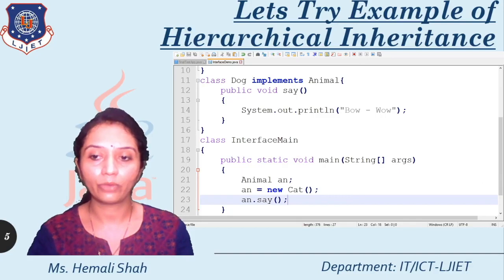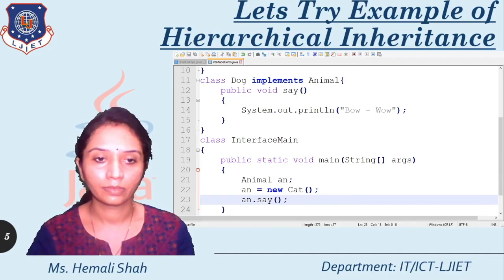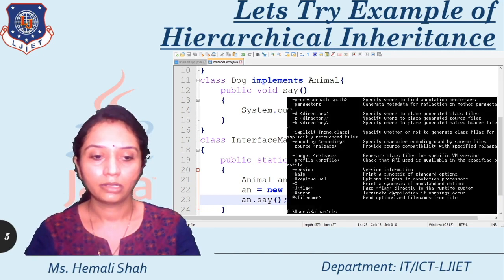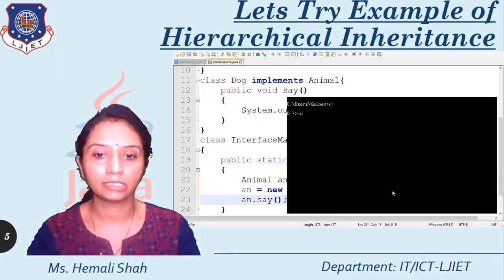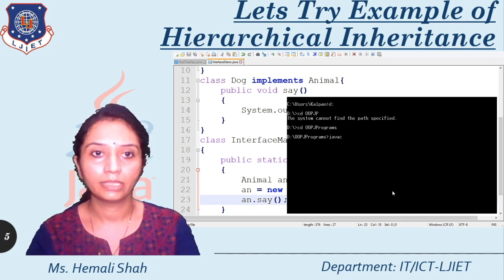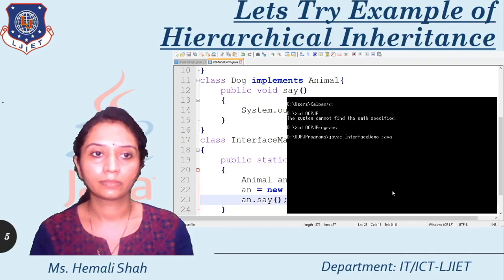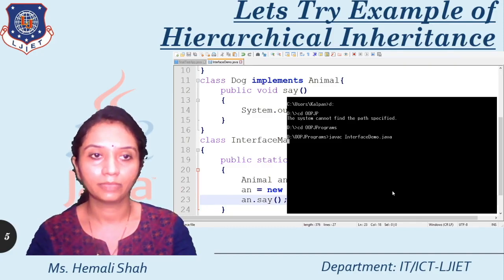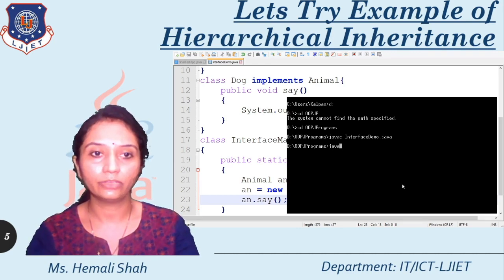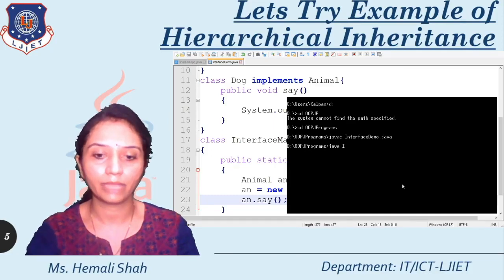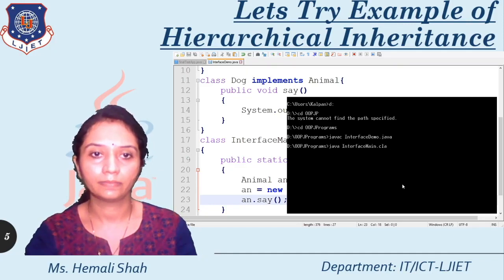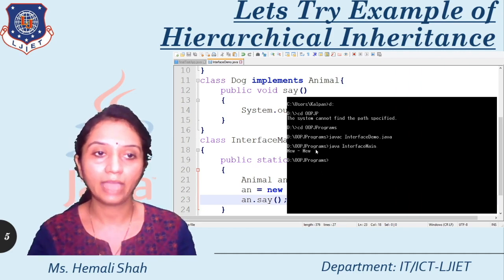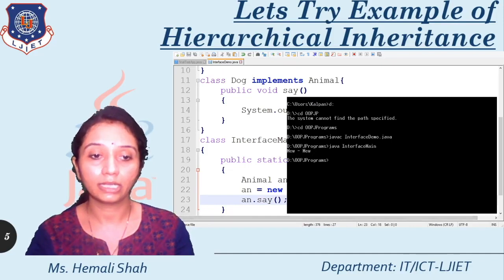I am going to open the command prompt, move into the d drive, cd oopj programs. Now javac, give the file name — interface demo.java. It is going to compile; it will take some time. Code is successfully compiled. Now try to run: java, then give the class name — interface main. Remove the dot class. See here, we are getting 'meow meow' because 'an' currently refers to the object of cat class.